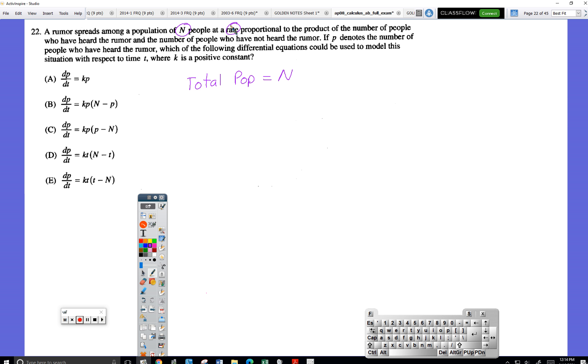So the population is, the rumor spreads among a population N people at a rate, a rate, so I have some rate, but it's interesting. I look over here, all these rates are dP/dt. So that right there implies that P is representing the population.